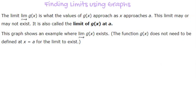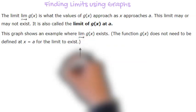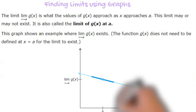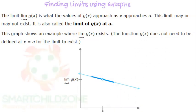The limit here is what the values of g(x) approach as x approaches a. This limit may or may not exist. It is also called the limit of g(x) at a. This graph shows an example where the limit of g(x) as x approaches a exists. The function g(x) does not need to be defined at x equals a for the limit to exist.